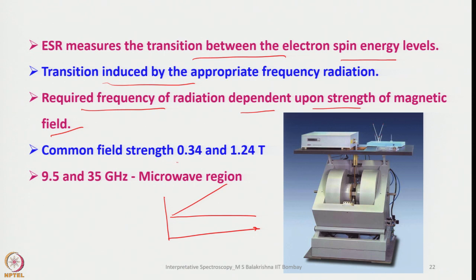Common field strengths are in the range of 0.34 to 1.24 tesla for the applied magnetic field B, and 9.5 to 35 gigahertz is the microwave region that is applied in a direction perpendicular to the applied magnetic field to perform transition of electron spins.